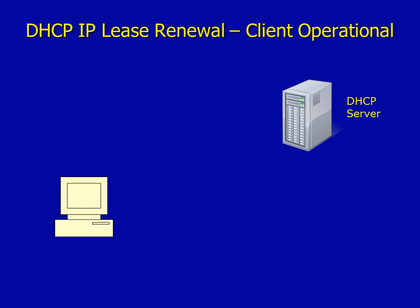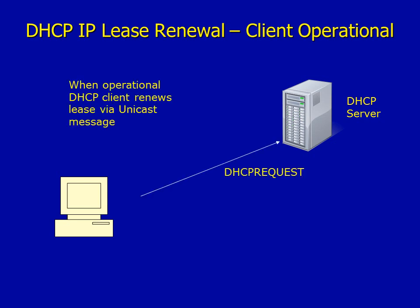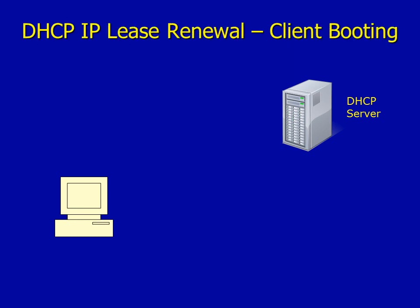Here's an example in action. We've got a DHCP client on the left and a DHCP server on the right. The client tries to renew its lease at 50% of the lease time — T1. The DHCP Request is sent via unicast, since the client is already operational. The DHCP server replies with a unicast DHCP ACK — an acknowledgement — confirming the client can continue using the IP address with an updated lease time.